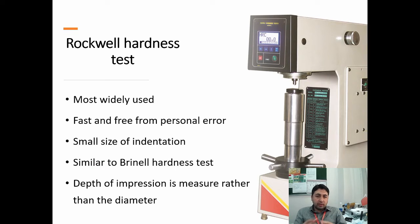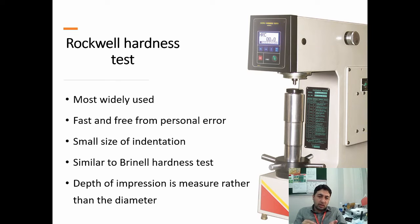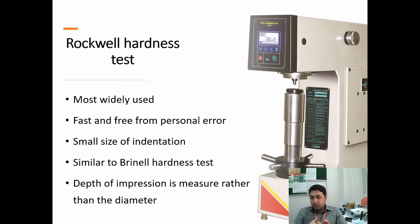The Rockwell hardness test is mostly used in the lab to find hardness. It is fast and free from personal error, and a small size of indentation is made. While it could be considered non-destructive testing, there is still a dent, so it falls under destructive testing. This test is similar to the Brinell hardness test, but the depth of impression is measured rather than the diameter.